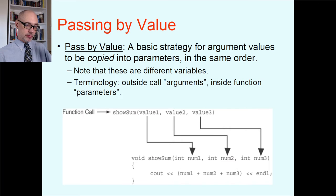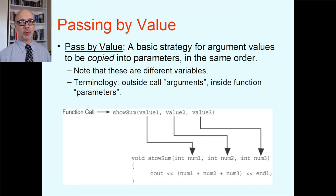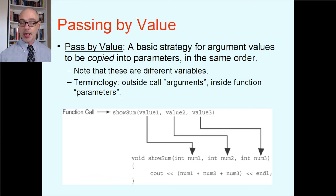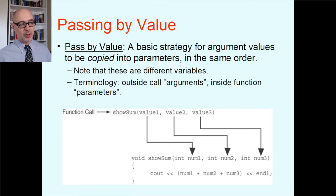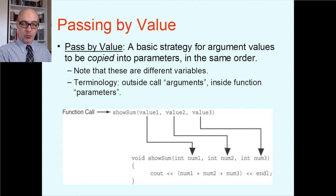The three values match up with the three parameters when the function starts due to pass-by-value copying, but they are technically six different locations in memory. If I'm in showSum and decide to change num1, that will not change value1 — two different locations. That's great because it provides mental focus. If Bob does something in showSum and changes num1, Alice doesn't have to deal with that change, because passing by value keeps value1 the same.